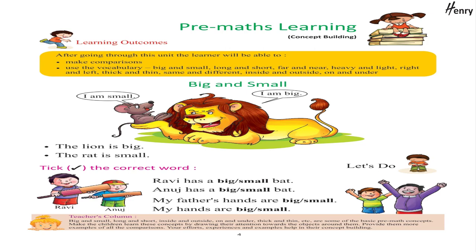Big and Small: I am Small, I am Big. The Lion is Big, the Rat is Small. Let's do — take the correct words.